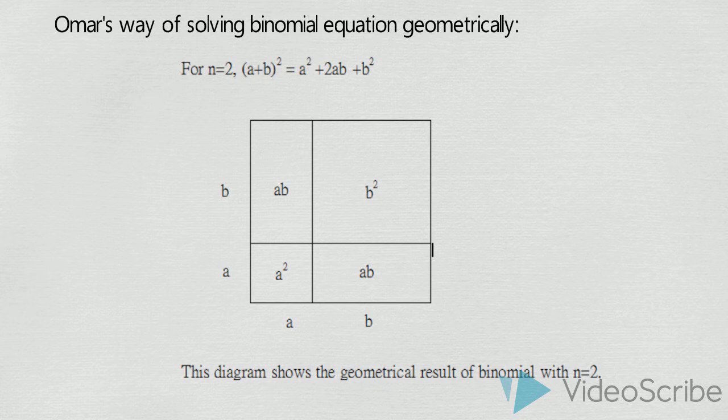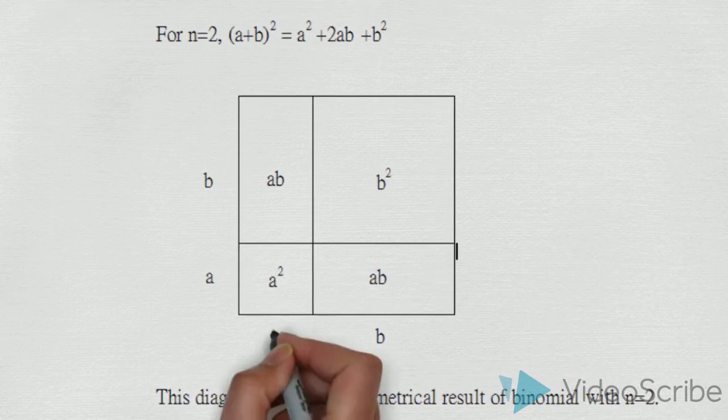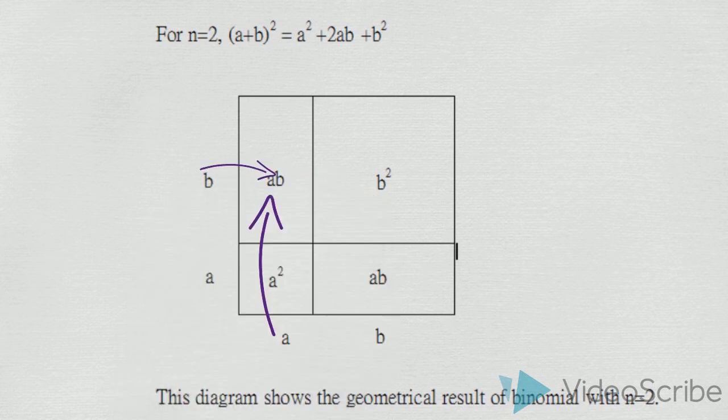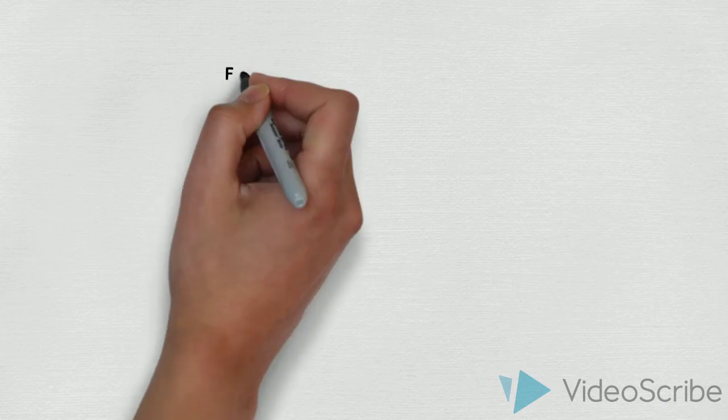which we will intersect both a and b to get the result as ab. The formal equation for expansion